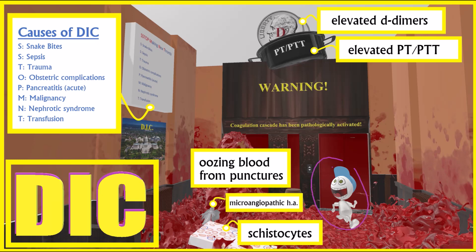This boy noticed the picture and also the mnemonic for D.I.C. causes on top of it: Stop Making New Thrombi. S for Snake Bites — snake bites could cause D.I.C. — then Sepsis, Trauma, Obstetric Complications if amniotic fluid leaks into the circulation, Pancreatitis, Malignancy such as Adenocarcinoma, Nephrotic Syndrome, and Transfusion. These are the causes of D.I.C.